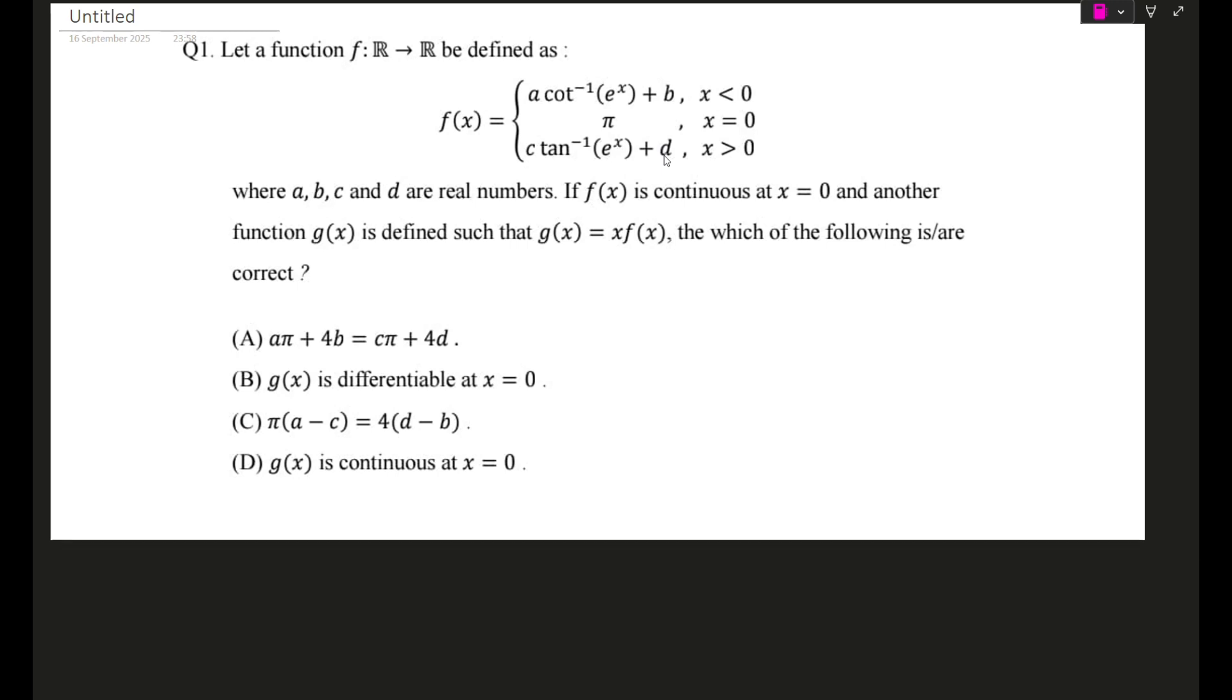Okay, so first of all, let's start off. So let a function f from real to real be defined as f of x equal to a lot of things given, and a, b, c, d are real numbers. If f of x is continuous at x equal to zero and another function g of x is defined as x times f of x, then which of the following is or are correct? This is what we have to find. So without further ado, let's start off.